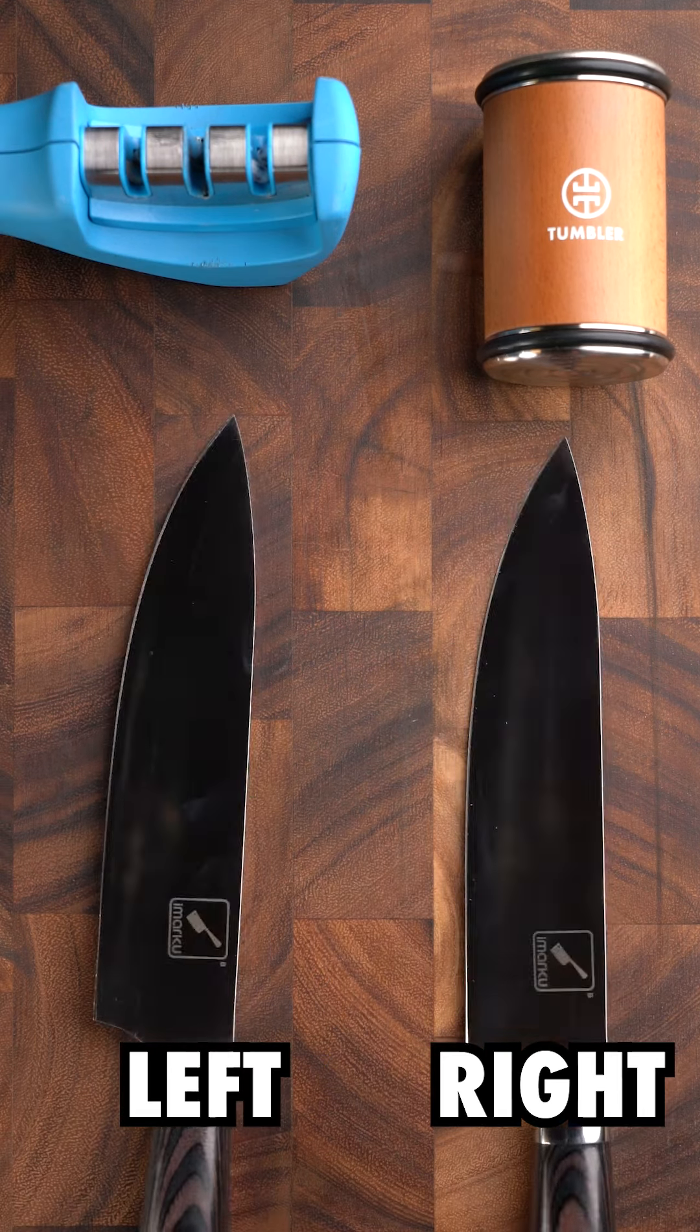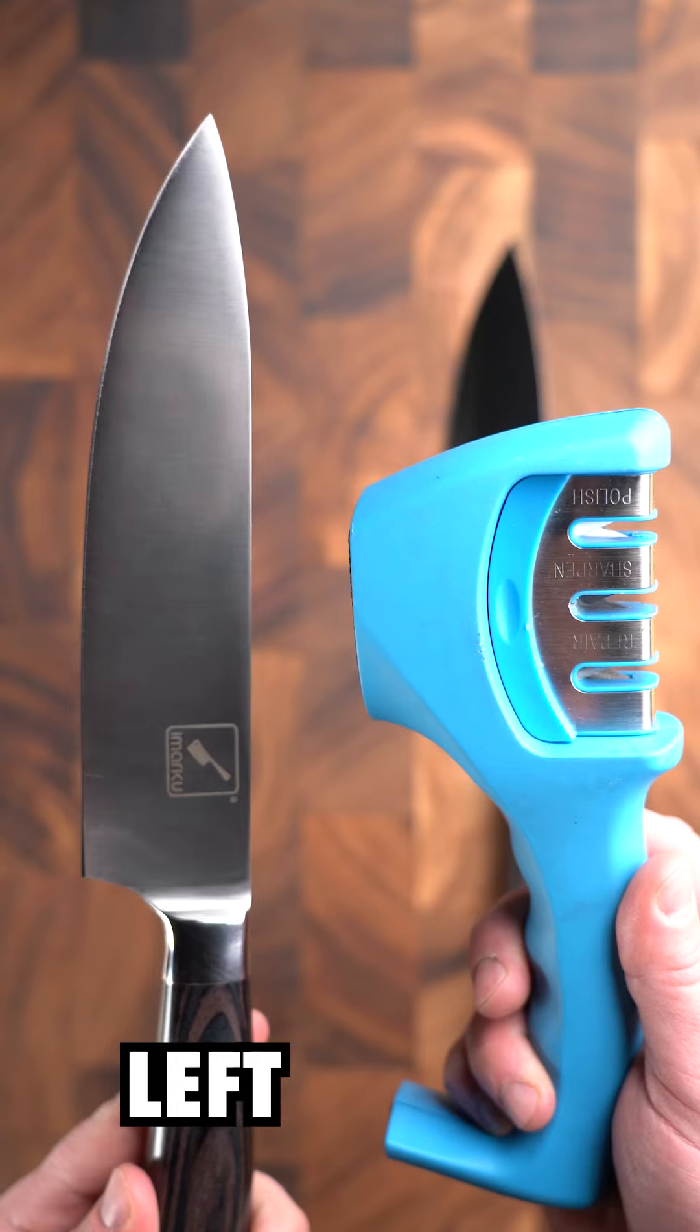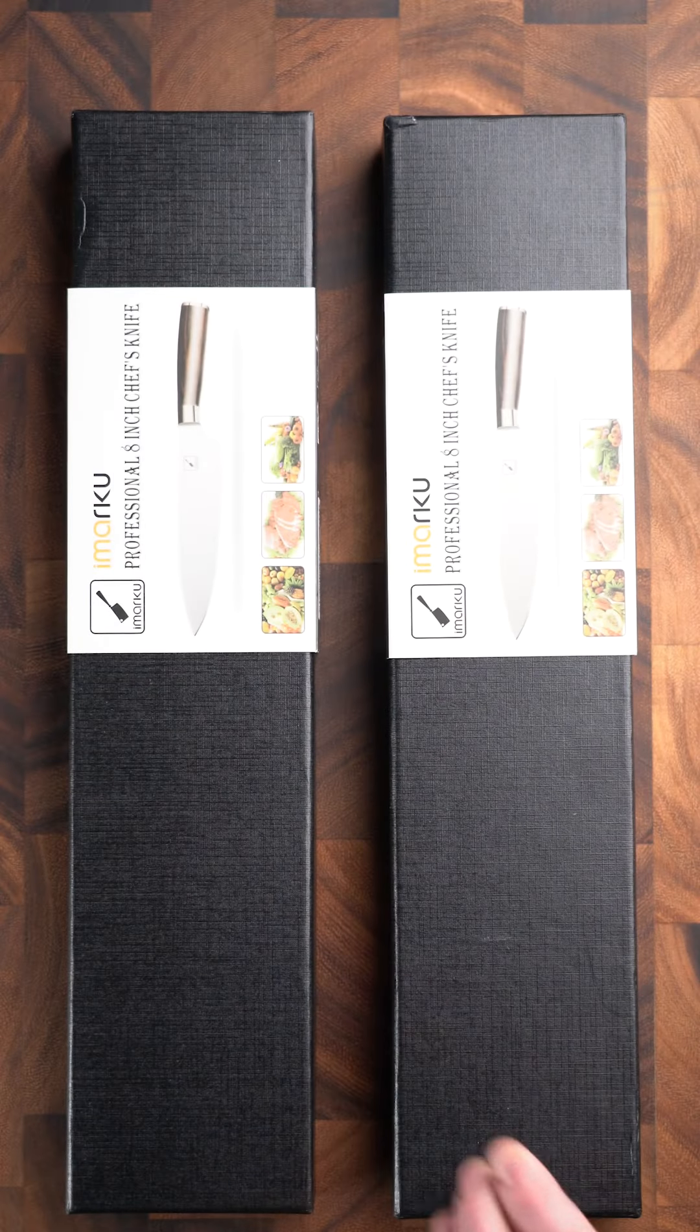I wonder which knife would be sharper after 15 seconds of sharpening - one sharpened with the tumbler rolling sharpener or one with a pull through sharpener. I have two of the exact same brand new knives for this challenge.